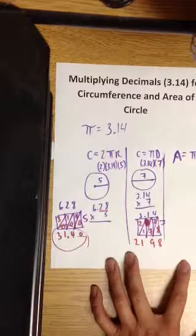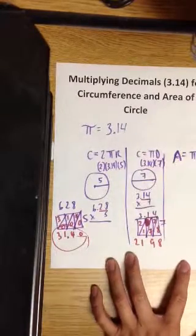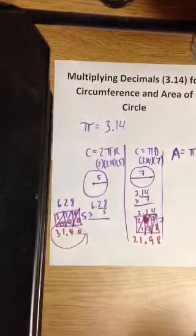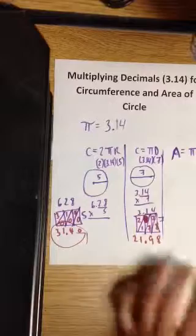I got 21...2, 1, 9, 8. There are two places behind the decimal. Two places behind the decimal. So, it's 21.98. Let's check my work. 7 times 3 is 21. Close. Very nice.